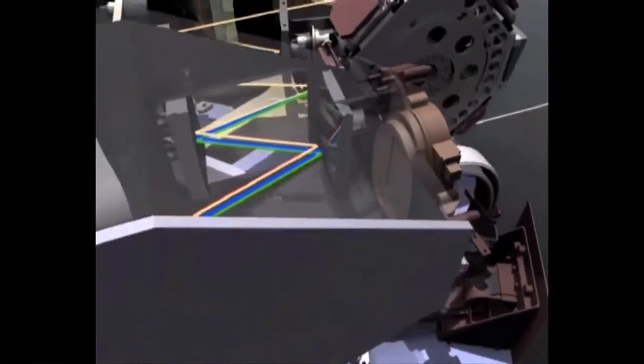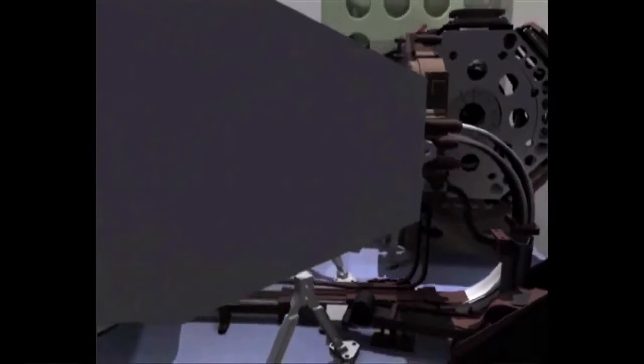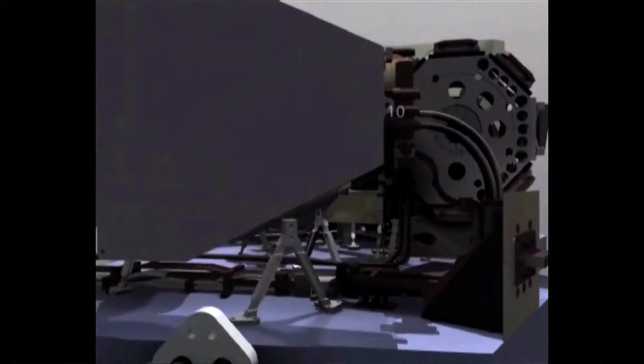These beams are then focused on the detector with another telescope, which is another three mirrors. And then we have the colors on the detectors and can evaluate them further downstream electronically.